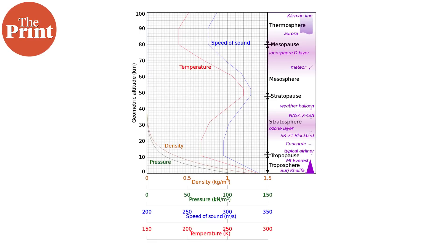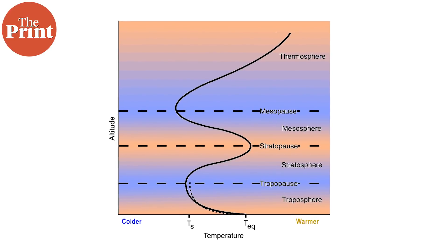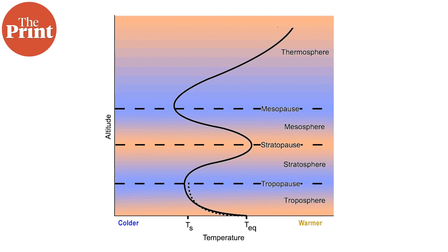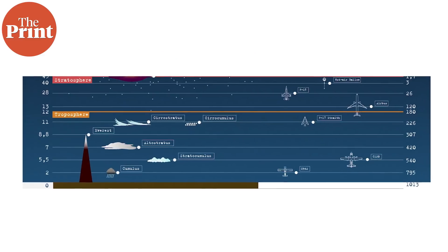Within the troposphere, temperature gets colder and colder as we go up. This is because the pressure goes down as we climb — gravity pulls all gas molecules lower, and higher above there is more space for these gases to disperse, spread out, and expand. When air expands, it cools down. So the troposphere becomes cooler and cooler as we climb up in altitude.